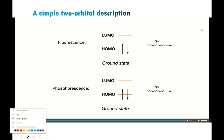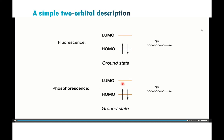This simple two-electron, two-orbital diagram leaves out a lot of complexity. It doesn't show the relative energies of the singlet and triplet states, because in addition to orbital energy gaps, you also have exchange interactions — especially prominent in phosphorescence where the two electrons have the same spin. It also doesn't show the kinetics of the process, nor does it recognize that many singlet and triplet states are multi-configurational with other orbitals involved.